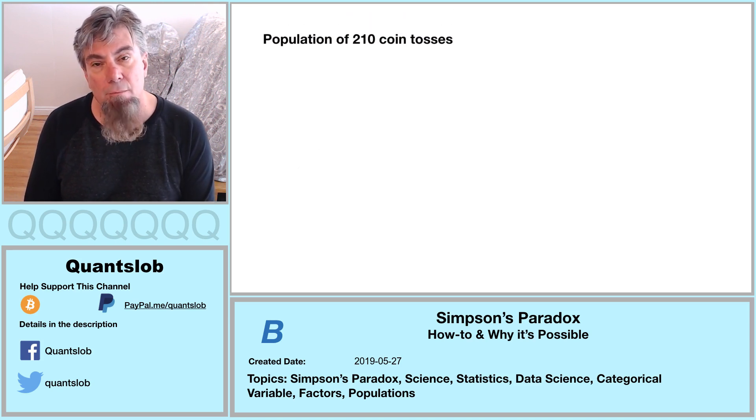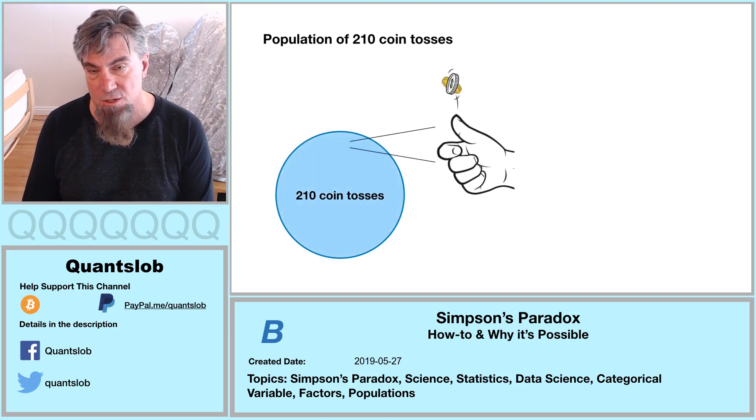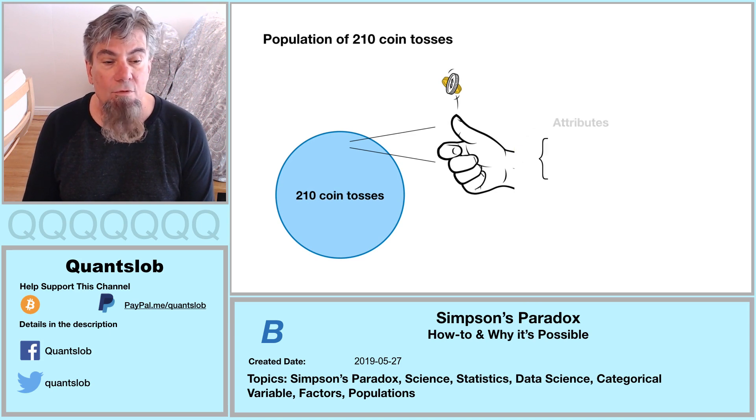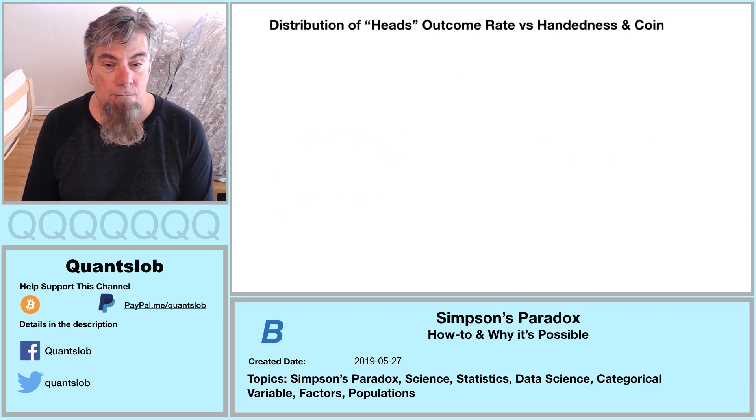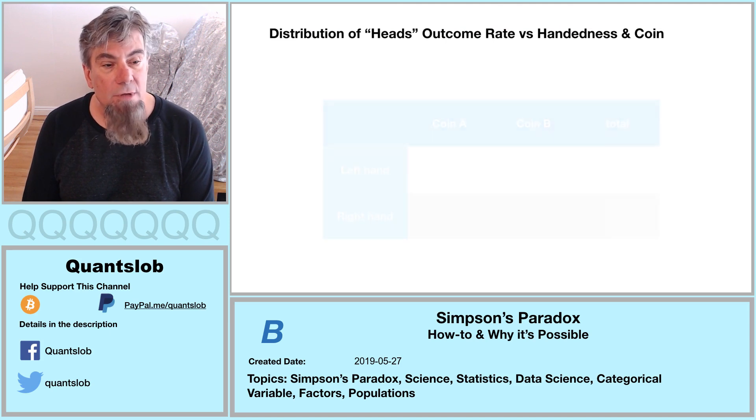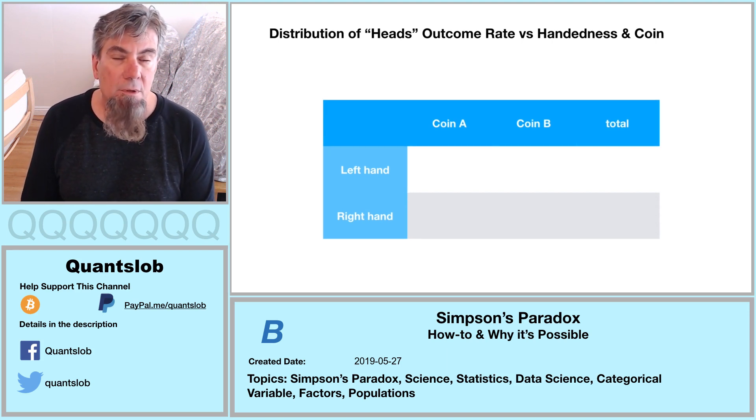We start by imagining a population of 210 coin tosses. There's a lot of ways to do this. This is just an example. We ascribe three categorical attributes or factors, each with two categories. Which hand was used to toss the coin, left or right. Which of two coins were used, coin A or coin B. And lastly, the outcome of the flip, heads or tails. We're going to create a two-by-two table to show the distribution of the proportion of heads given the other two factors, which hand was used and which coin was flipped. The number of flips in our population is 210.